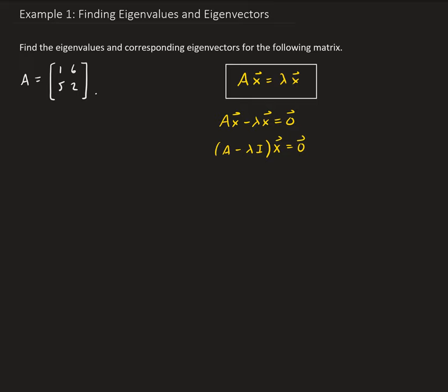The reason we include the identity matrix I is to preserve the subtraction. Since A is two by two in this case, I needs to be two by two as well, and lambda is just a scalar — so this is a valid operation.